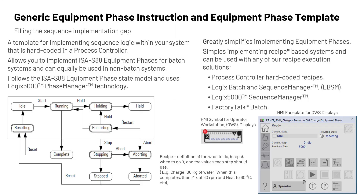The generic equipment phase instruction and equipment phase template fill the sequence implementation gap. They provide a template for implementing sequence logic within your system that is hard-coded in a process controller and they are only available to use in a process controller. It allows you to implement an ISA S88 equipment phase for batch systems and can equally be used in non-batch systems.